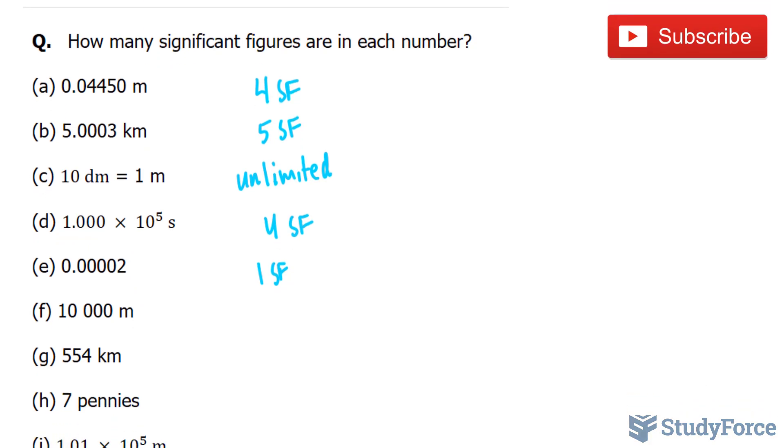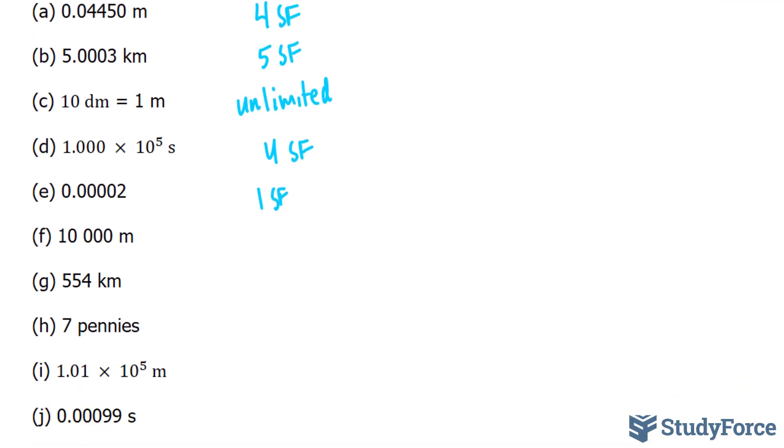Let's move on to F. In F, we have the number 10,000 meters. This has only one significant figure. These zeros are insignificant. However, had we put a decimal right after that last zero, then all five of them would be significant.